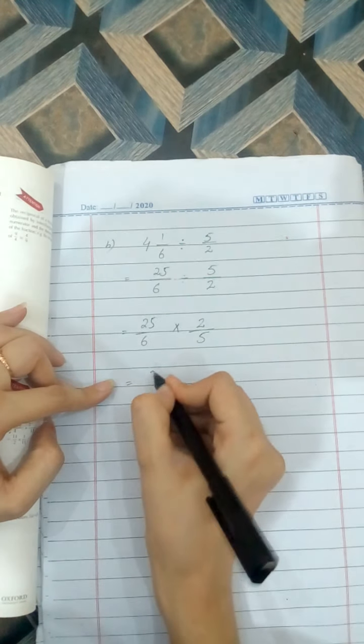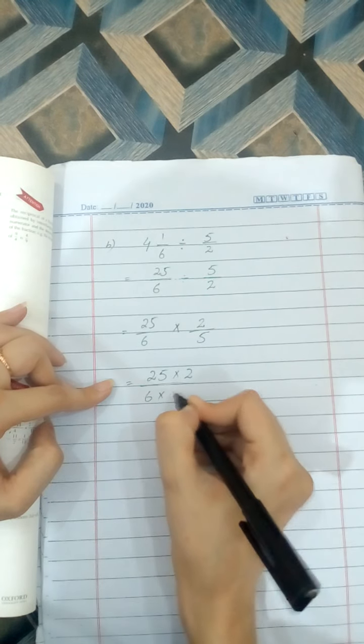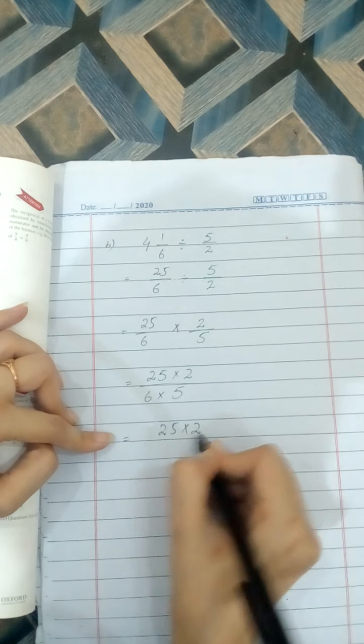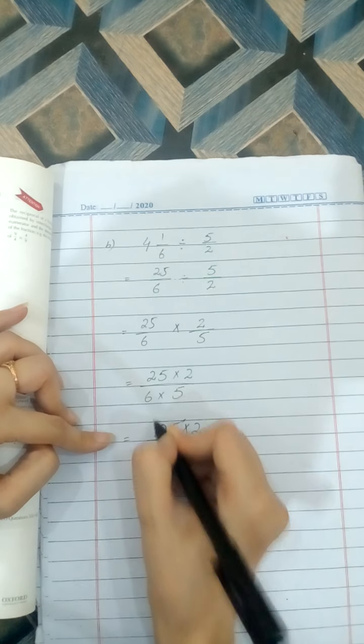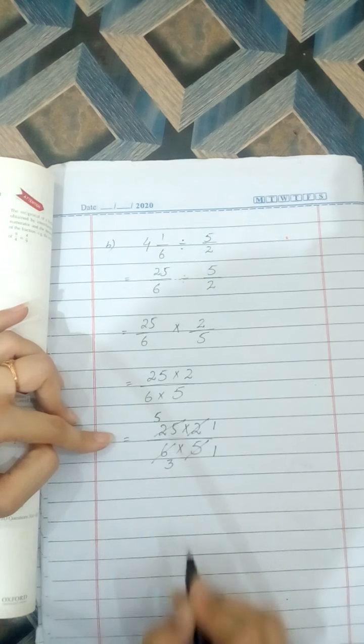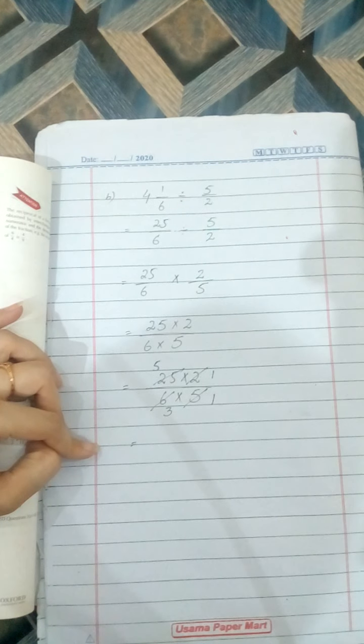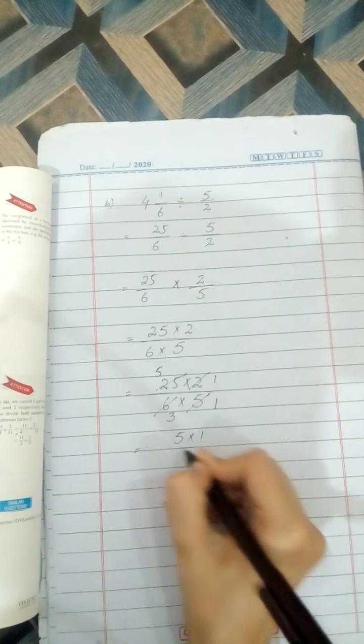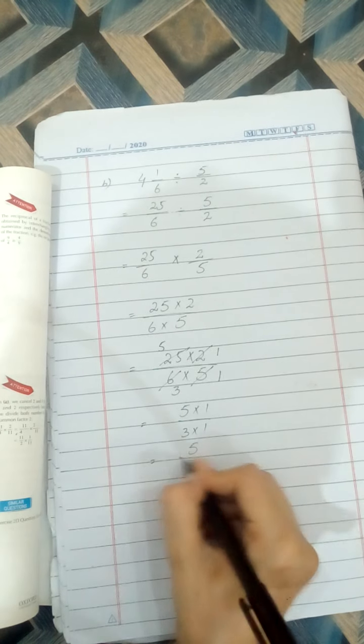Now simple, multiply the numerator with the numerator and denominator with the denominator. Now simplify with the common factor. 5 ones are 5, 5 times 5 is 25, 2 ones are 2, 2 times 3 is 6, clear? Write it: 5 times 5 multiply by 1, 3 multiply by 1, 5 and 5 is 5, and 3 and 3.